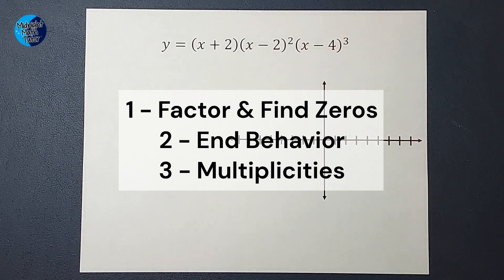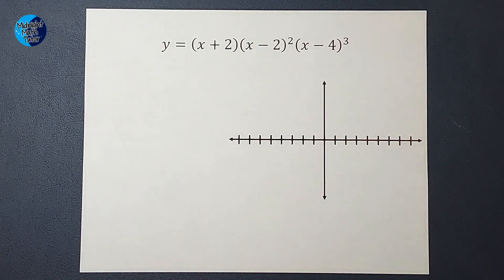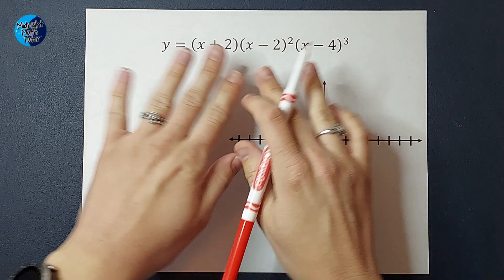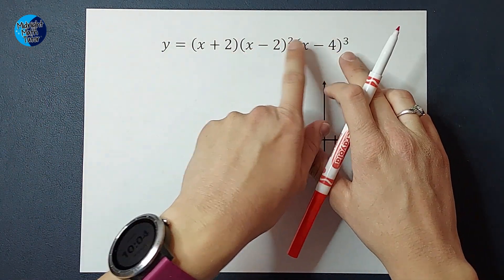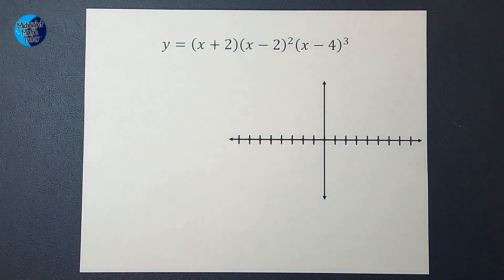So my first step is to factor and find my zeros. Guess what? We already factored here. Isn't that nice? We could write this one twice and this one three times since they're squared and cubed, but we don't really have to. So now to find my zeros.